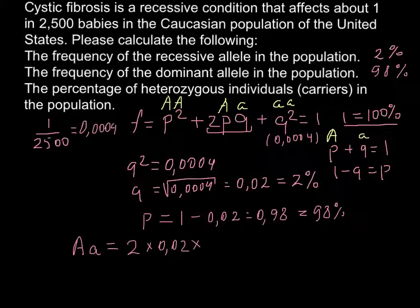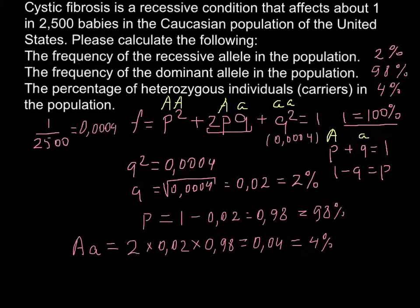If you multiply these numbers, we get 0.04, or if we move the comma two decimal places to the right, this is 4%. So heterozygous individuals in the population represent 4%, or 1 out of 25 people would be carriers of this disease.